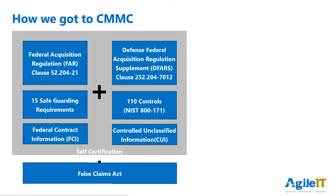The False Claims Act dates all the way back to the Civil War but has gained a lot of power since the 1980s. The FCA is meant to prevent contractors from defrauding the government. It's unusual since it lets individuals sue companies on behalf of the government and then get a portion of the damages. In 2019, the DOJ obtained over $3 billion in FCA settlements, including an $8.6 million settlement for Cisco for undisclosed cybersecurity vulnerabilities.